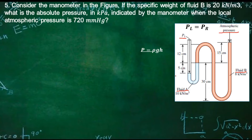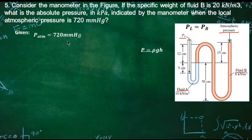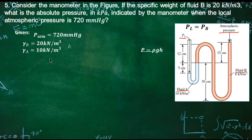Always remember that pressure is equal to density times gravity times height — that's the equation. In this problem, it always includes the fluid. The specific weight of fluid B is given as 20 kilonewton per meter cube, and the specific weight of fluid A is 10 kilonewton per meter cube.